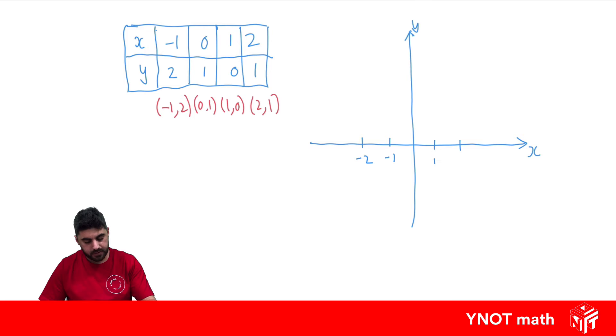Let's draw in some points on our Cartesian plane. Let's see what happens. So first we're going to plot minus 1, 2. So minus 1 for x and 2 for y would be here. 0 for x and 1 for y would be here. 1 for x and 0 for y would be here.